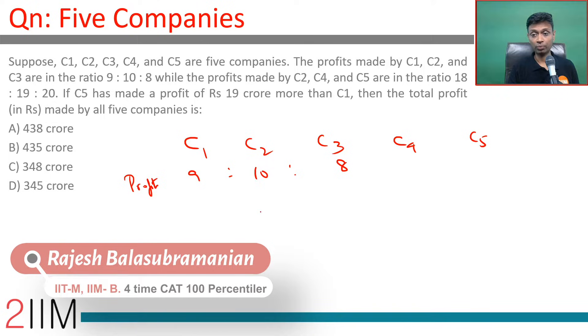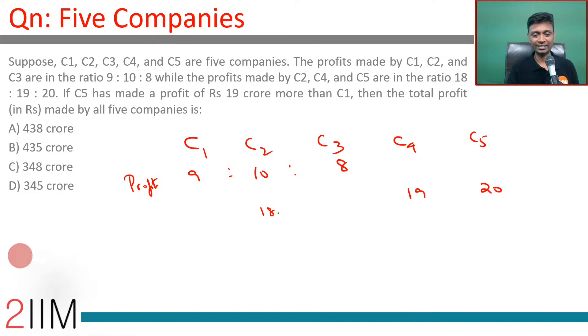This is 10, this is 18. The LCM is 90, so rejig this. This becomes 90, this is 81.